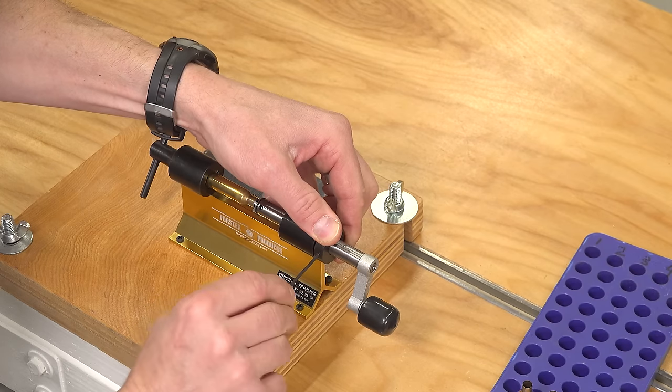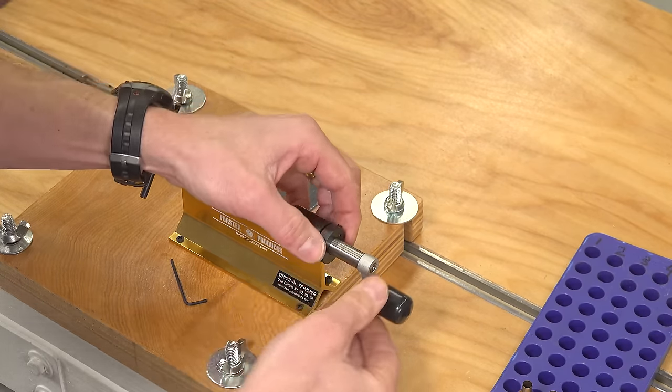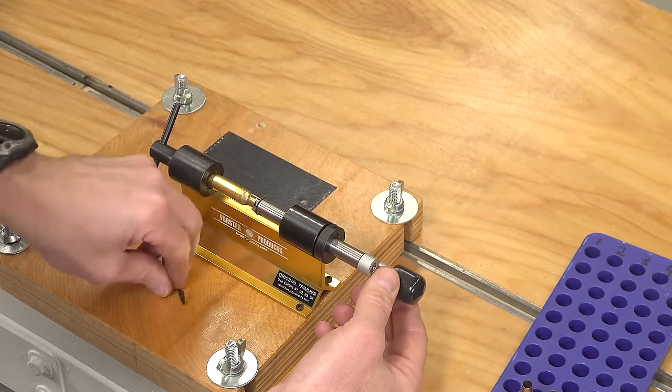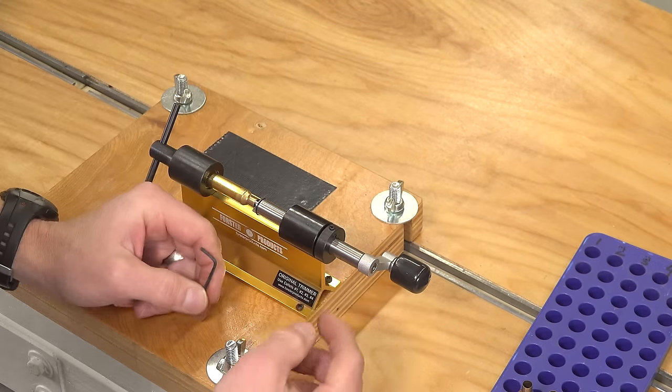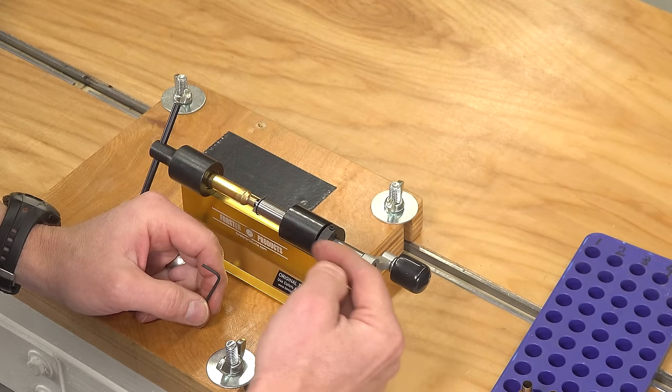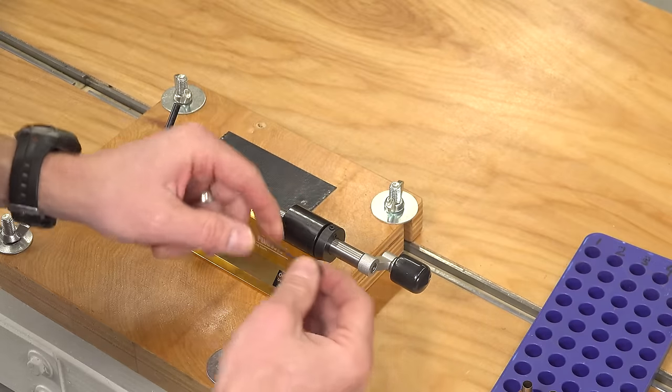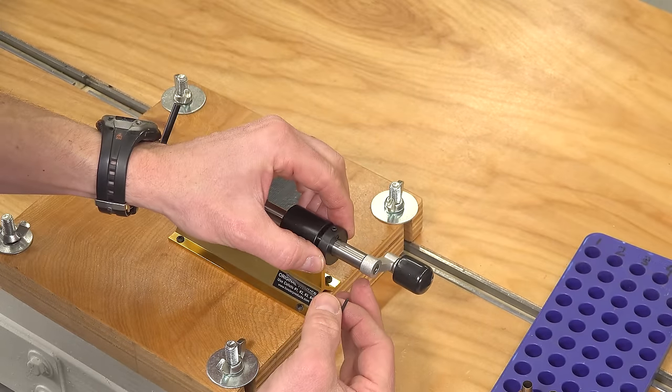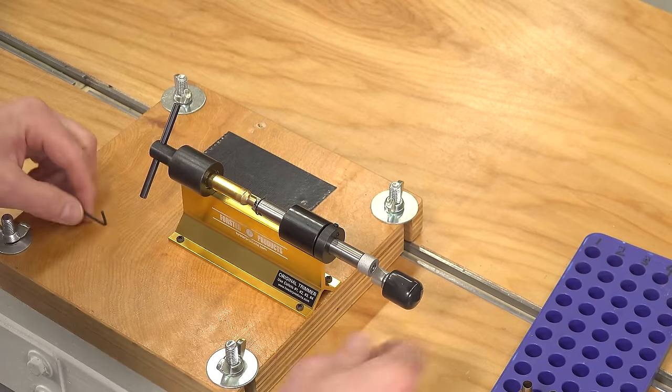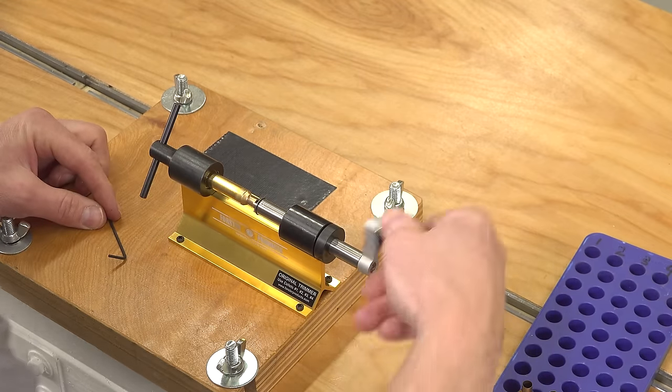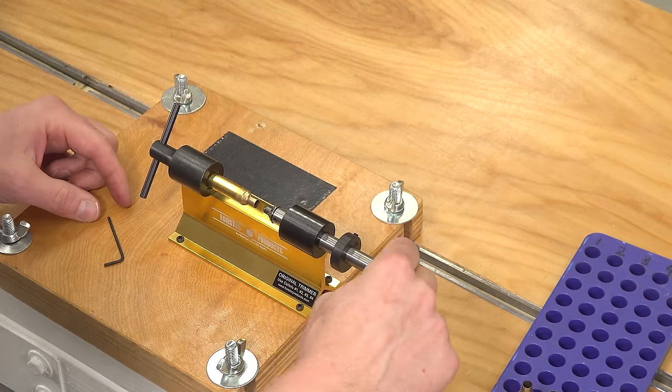What's cool about this case trimmer is we've got a fine adjustment right here. There is a set screw that holds that fine adjustment in place, but basically what happens is the fine adjustment screw determines exactly how deep the cutter is going to go. So if we try a trim now we're just going to take off a very minuscule amount.